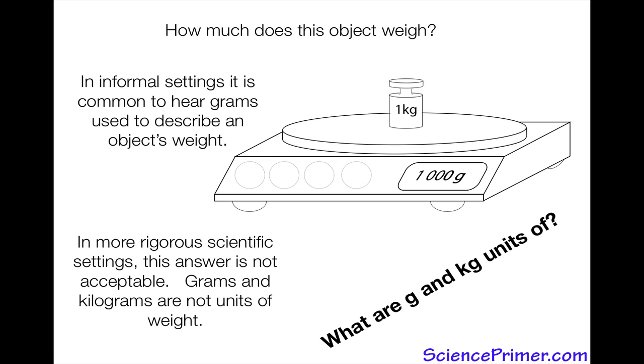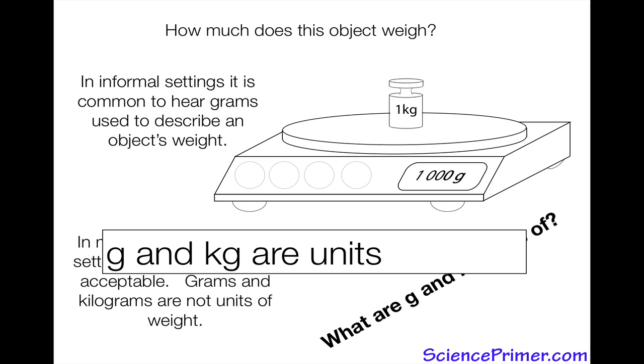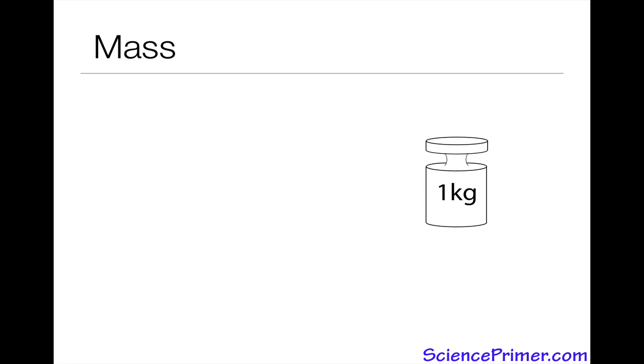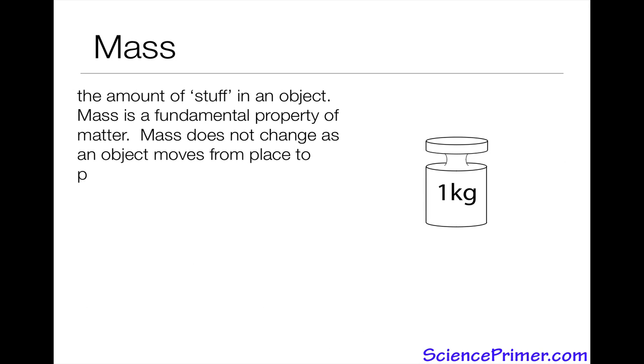The answer is they are units of mass. So what is mass? Mass is the amount of stuff in an object. Seems kind of a fuzzy definition, but it really does capture the idea that mass is a fundamental property of matter. It does not change as an object moves from place to place. It's a fundamental property and is the amount of matter contained in an object.